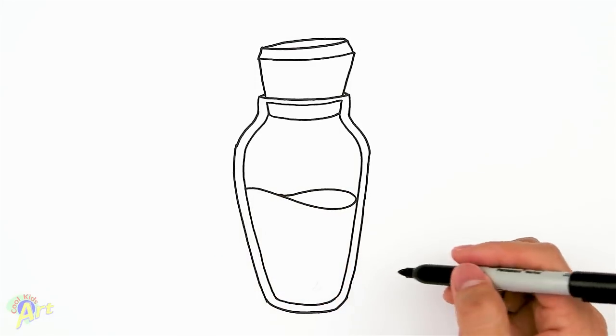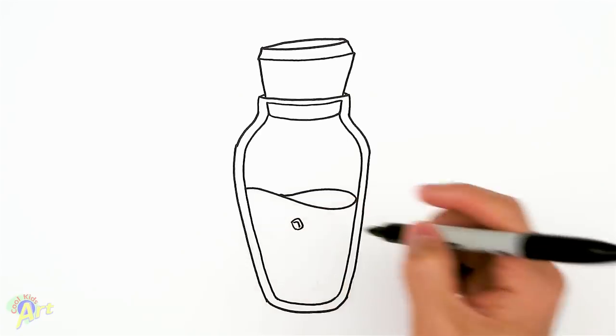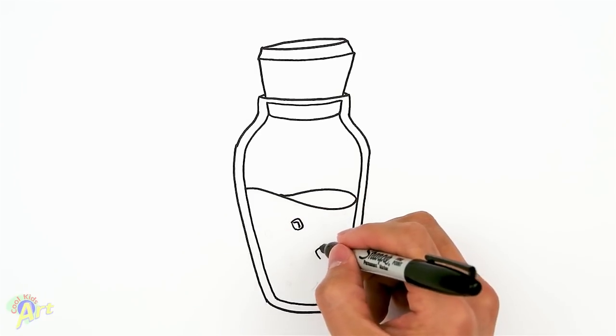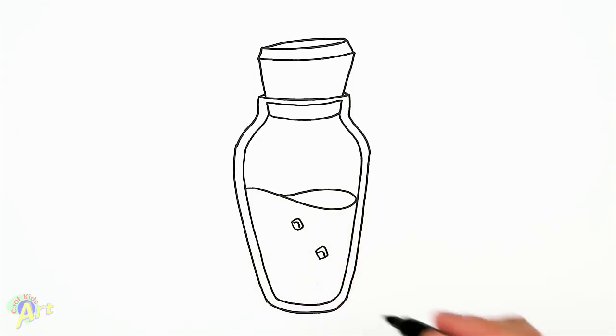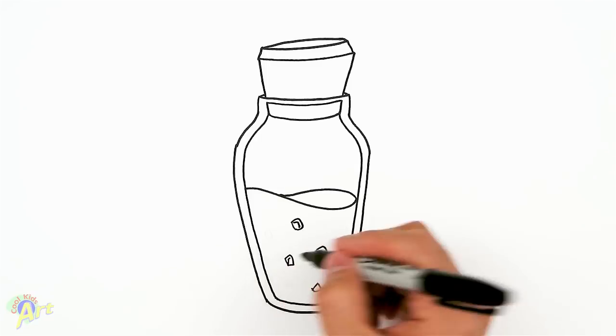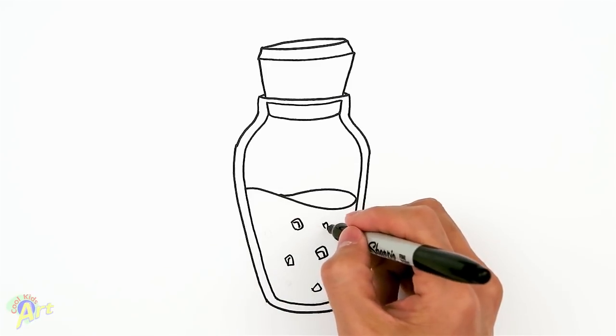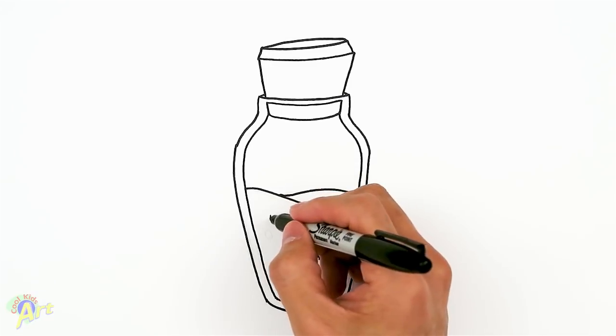And then now we can draw in—I don't know what these little things are—look like little crystals in there. I'll just draw some of them in here. Again, you don't have to follow this. You can just do whatever you want as long as you have some little chunks in there.